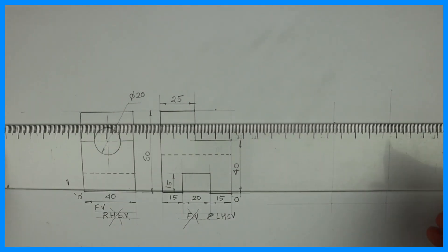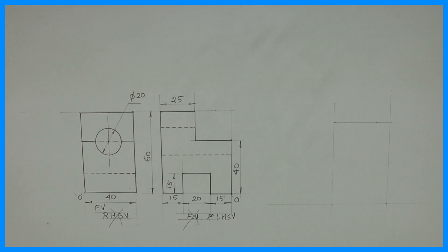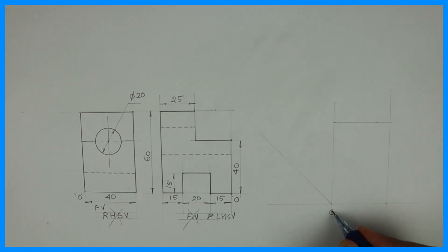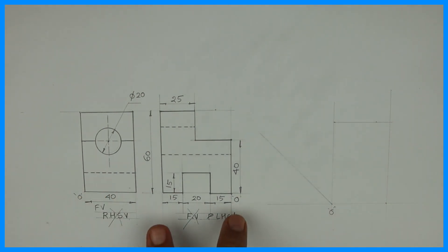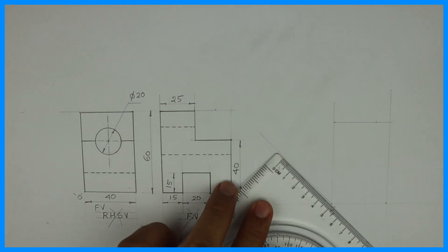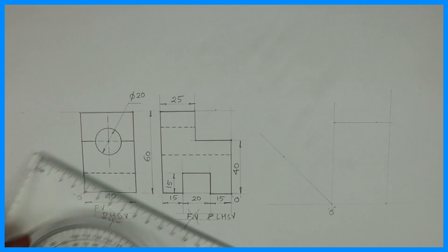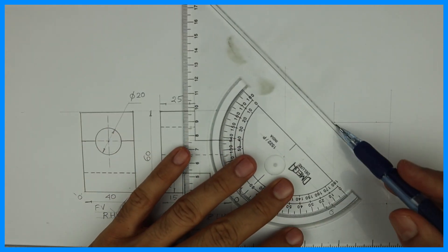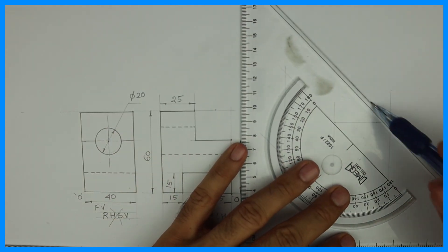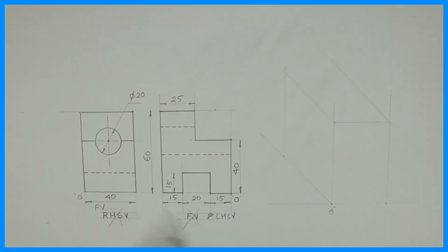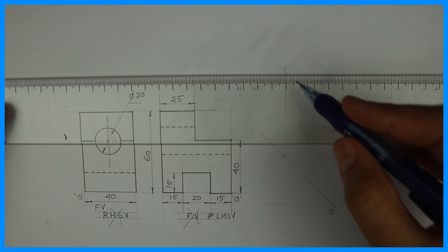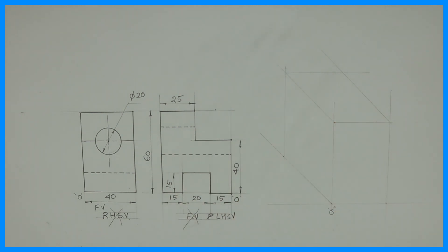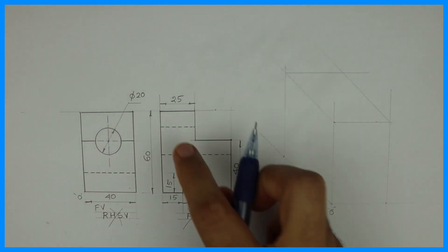Then we need to start. We'll draw the front view layout 40 by 60 and we'll draw a 45-degree line from here. The origin is here. The width is 50, so you mark 50 over here and complete the box. So this box is 40 by 60 by 50.